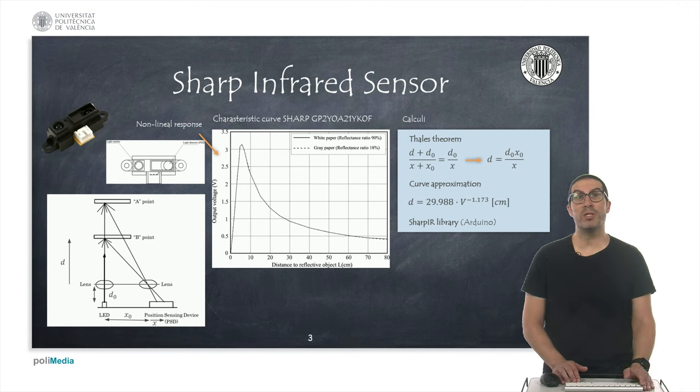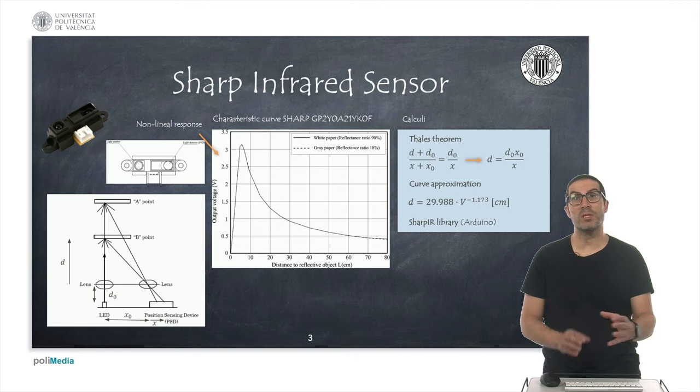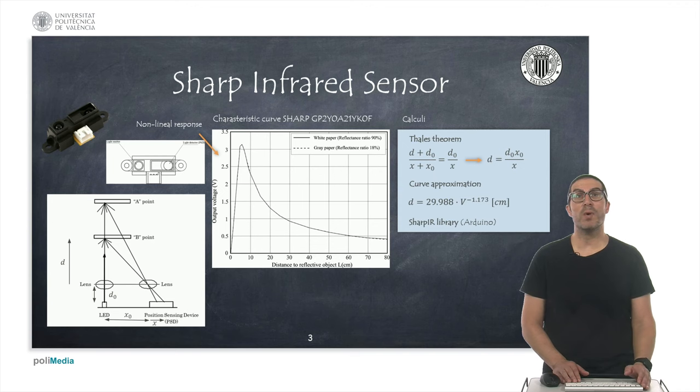The operating principle consists of an LED that emits an infrared light that bounces off an object and part of this light is returned in the direction of the sensor, passes through a lens, and is detected by a linear photo detector.